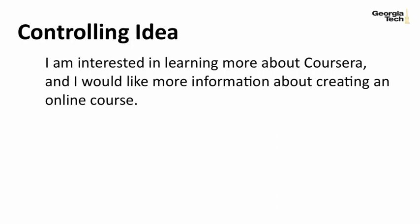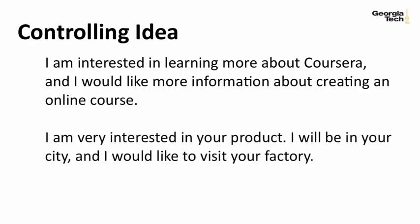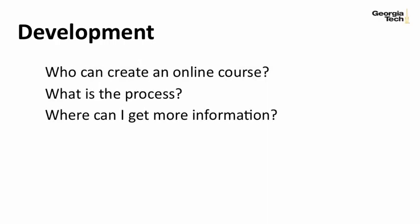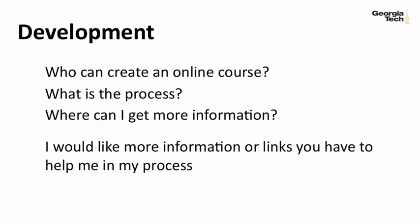Next, the controlling idea should state why you are introducing yourself to the reader. Something like: 'I am interested in learning more about Coursera and I would like more information about creating an online course.' Or: 'I am very interested in your product. I will be in your city and I would like to visit your factory.' Now we write the development. In this situation, these would be some WH questions I would have for the reader: Who can create an online course? What is the process? Where can I get more information? You can choose to include the questions directly or write more indirectly. The language used here is more formal and humble.